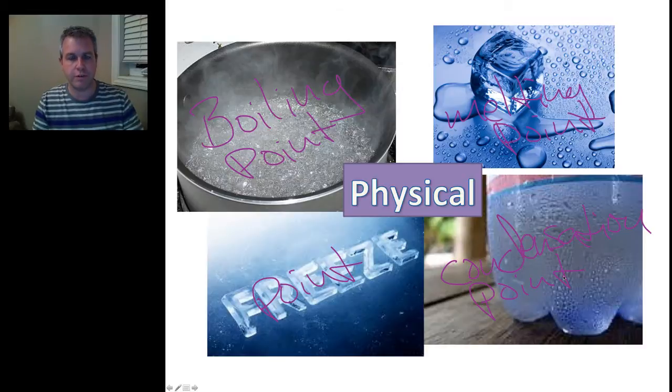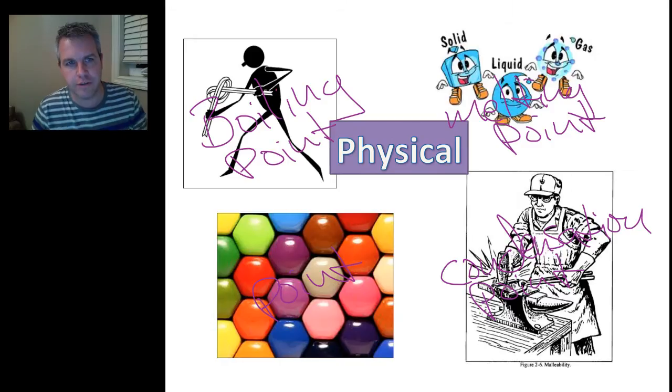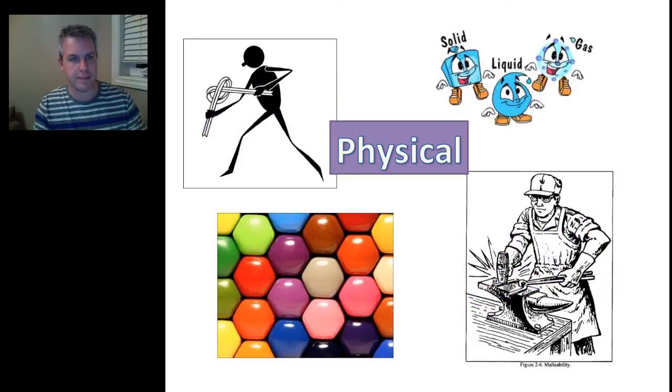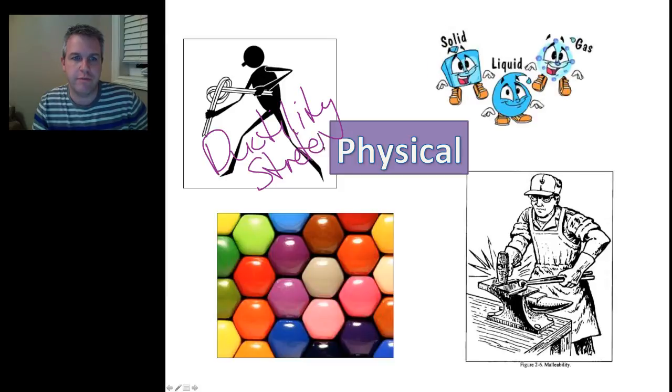Now, these are not the only physical properties, but this is a physical change that it undergoes. So, it doesn't actually alter the chemical makeup of the substance, but it alters the physical makeup of that substance. The physical properties, we're not actually changing the chemical makeup of it, but this is ductility. And this is the ability to be stretched or bent.